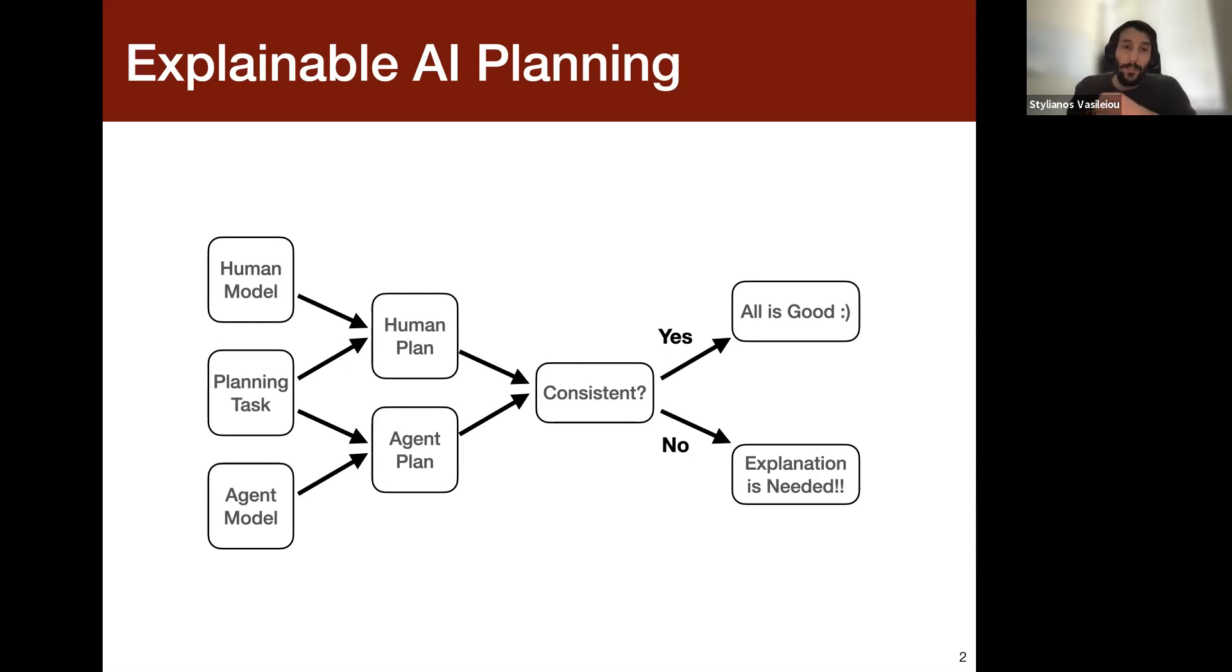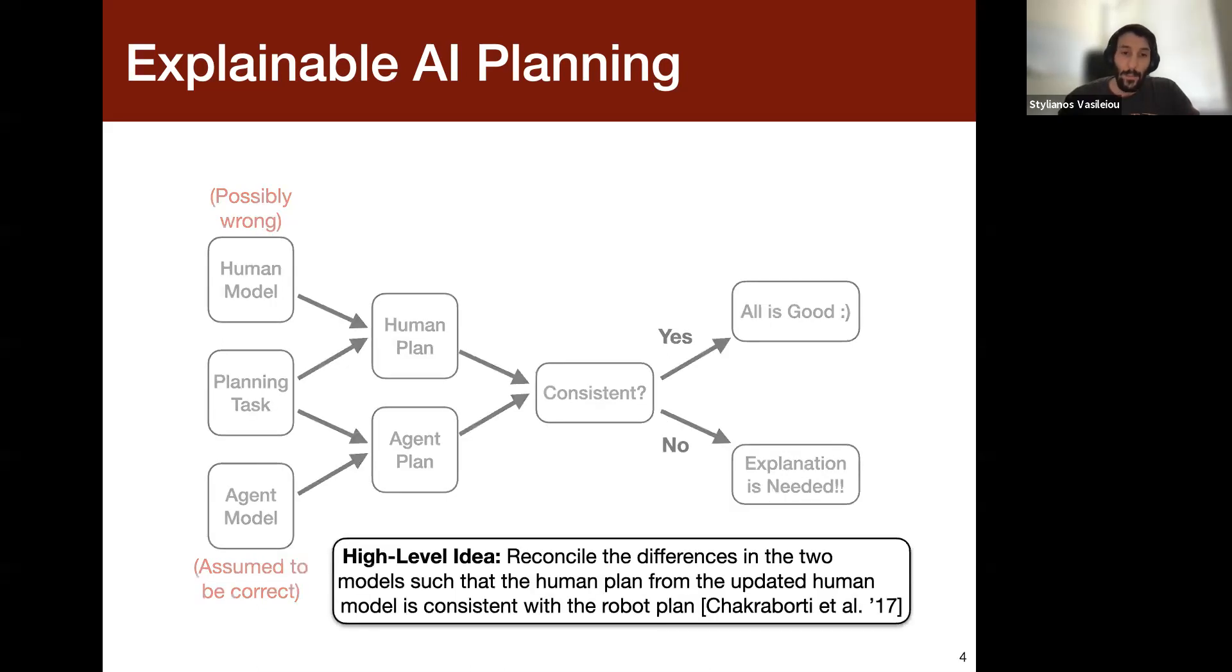And then according to these models, they generate plans. And if these plans are consistent, then everything is fine. But if they're not, then there's a need for an explanation. So that's why it's called explainable AI planning. Some assumptions here are that the agent's model is assumed to be correct, like the ground truth, and the human users possibly wrong. So basically there are some differences in the actions or the conditions of the actions in the human's model. And that's why they're inconsistent. So the high level idea here is to reconcile these differences between these two models, such that the human's plan from the updated human model is consistent with the robot plan.